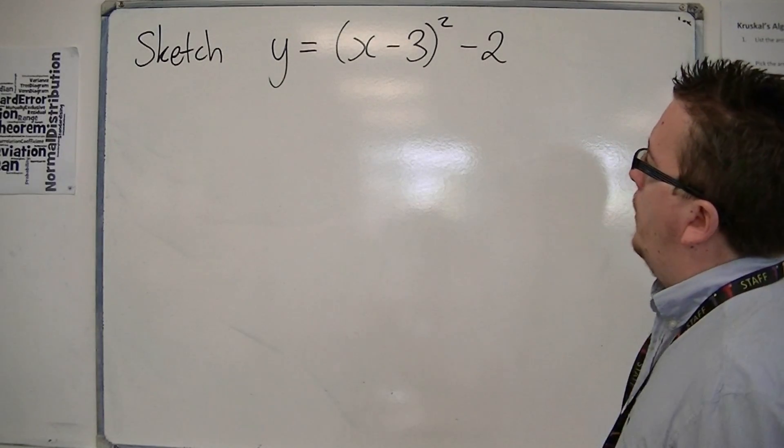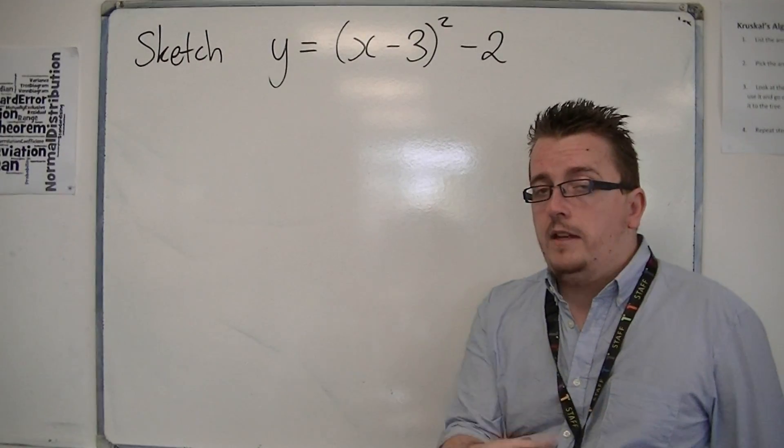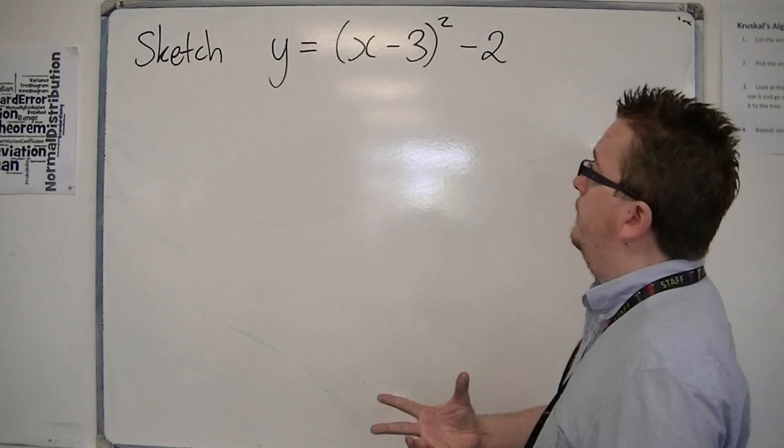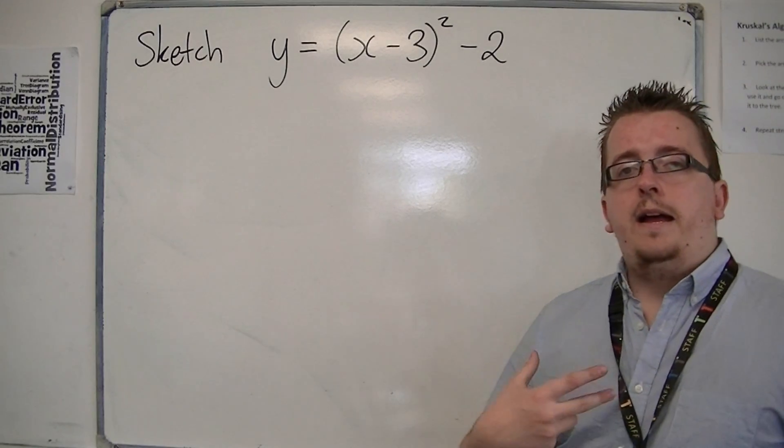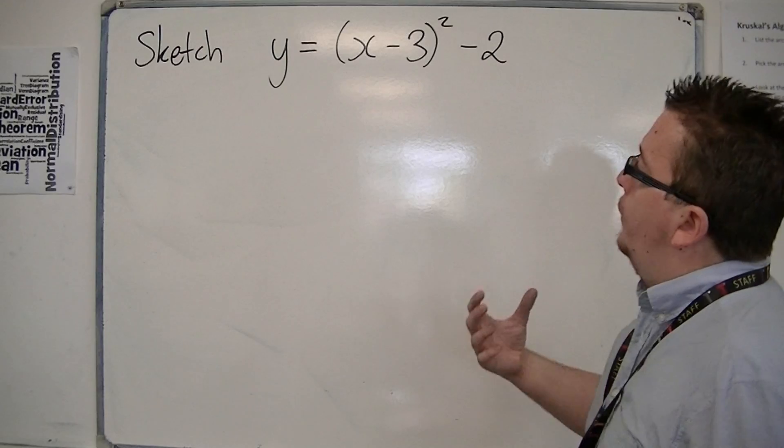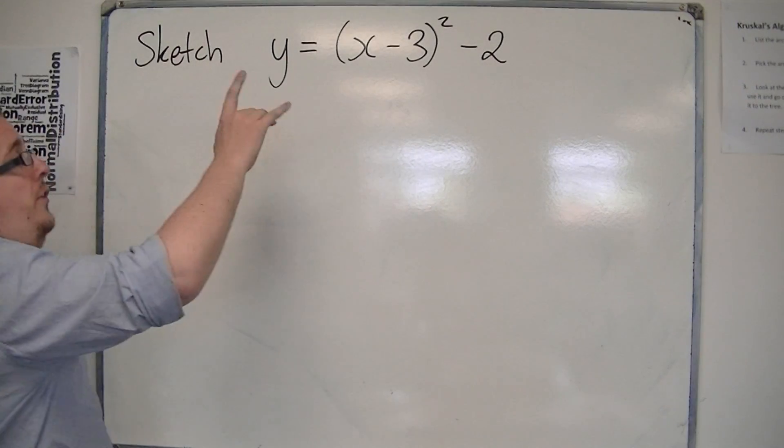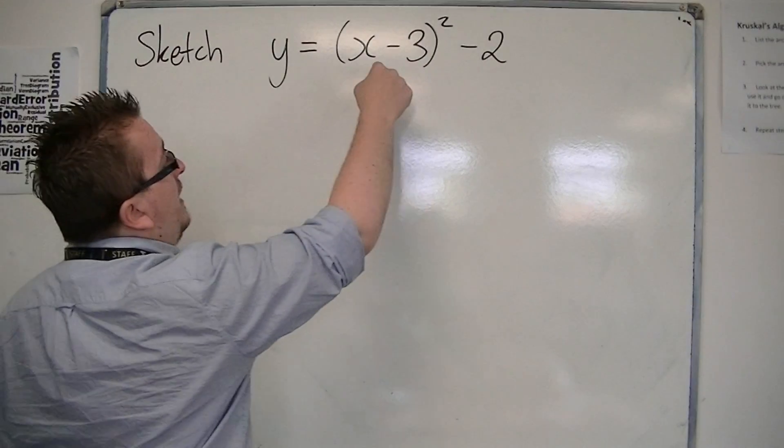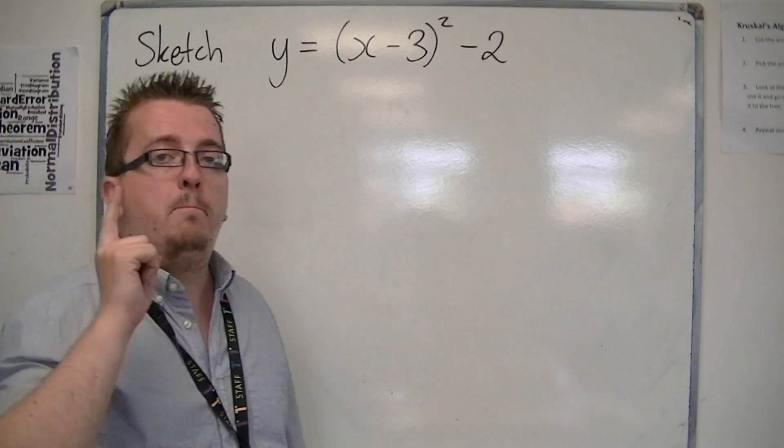And what you need to think about is, what format is it in? It is currently in completed squared format. You could see this as a translation of y equals x squared to this, so that the x has been replaced with x minus 3 and the y has been replaced with y plus 2.